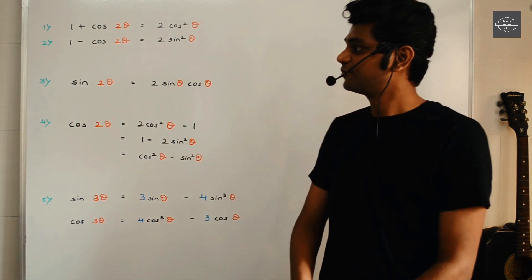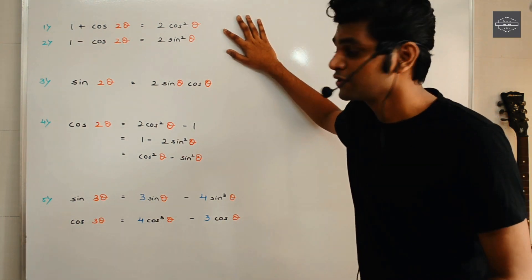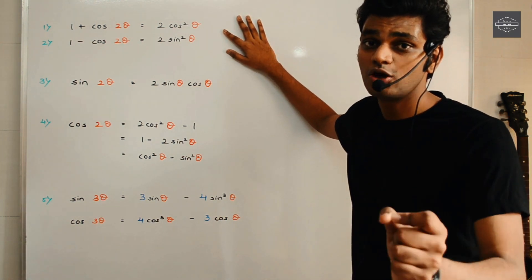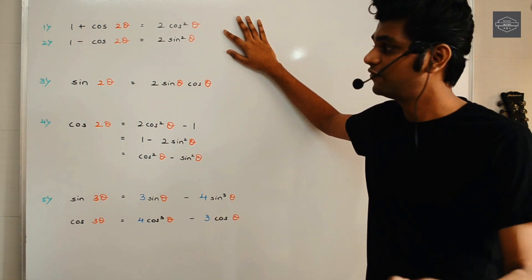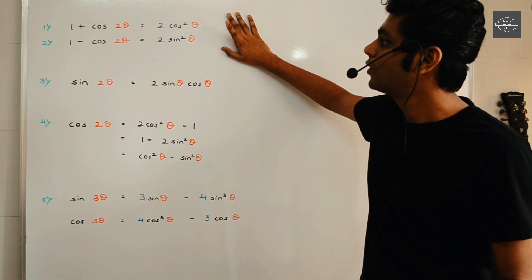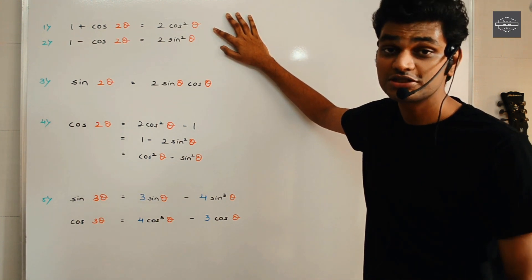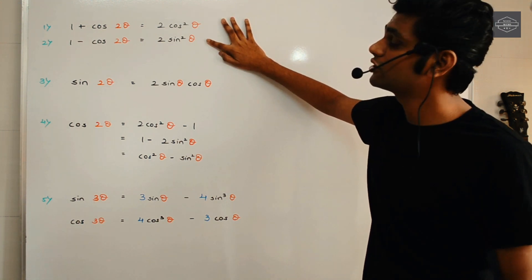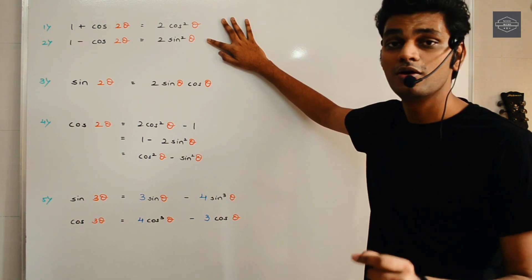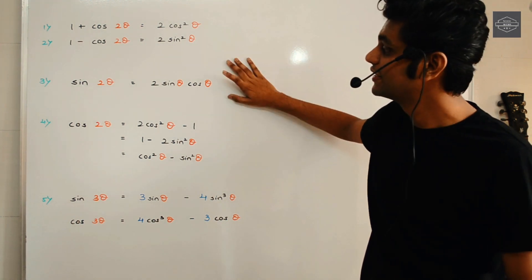Let's begin with the first set of formulae. Focus on the rhythm we use here. We say: 1 plus cos, 2 cos square — 1 plus cos, 2 cos square — 1 minus cos, 2 sin square — 1 minus cos, 2 sin square — sin 2 theta, 2 sin cos — sin 2 theta, 2 sin cos.